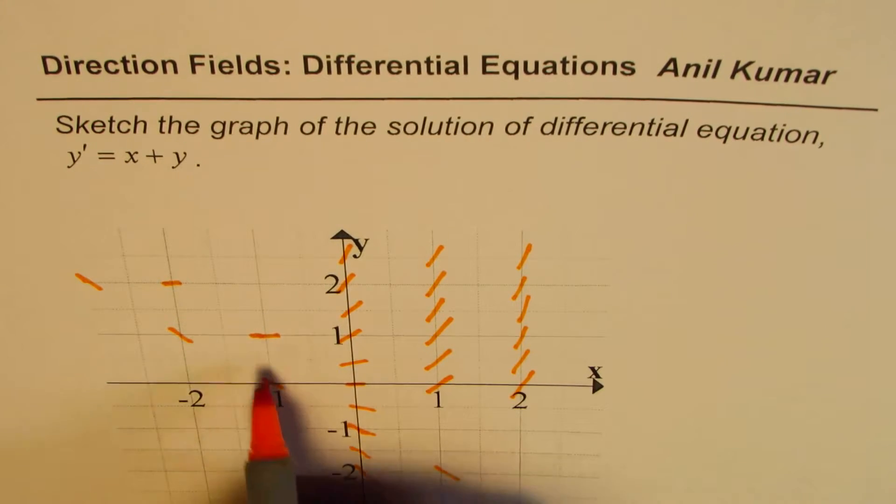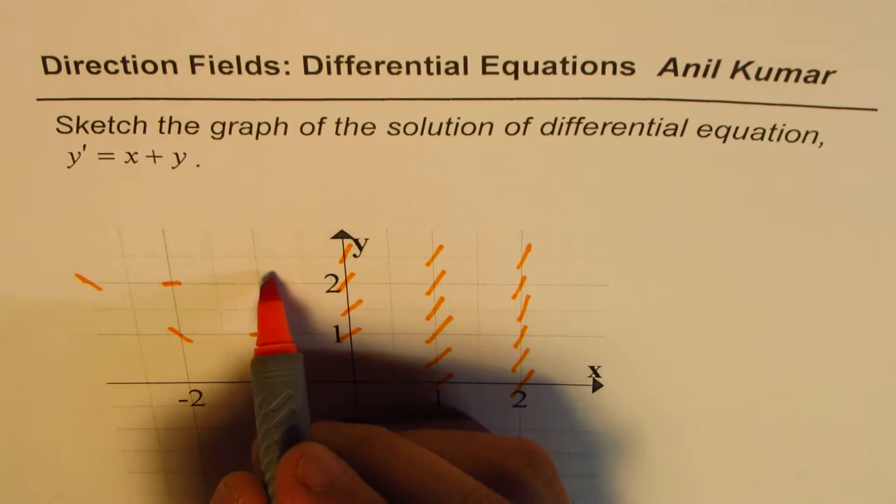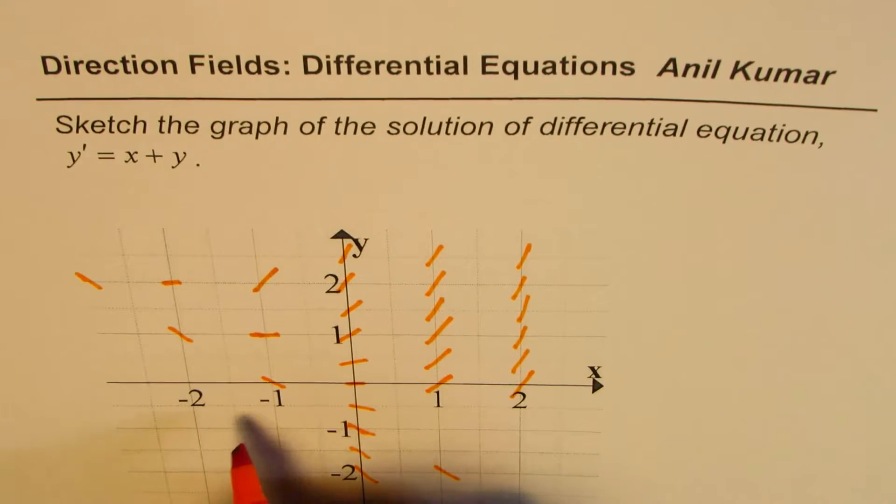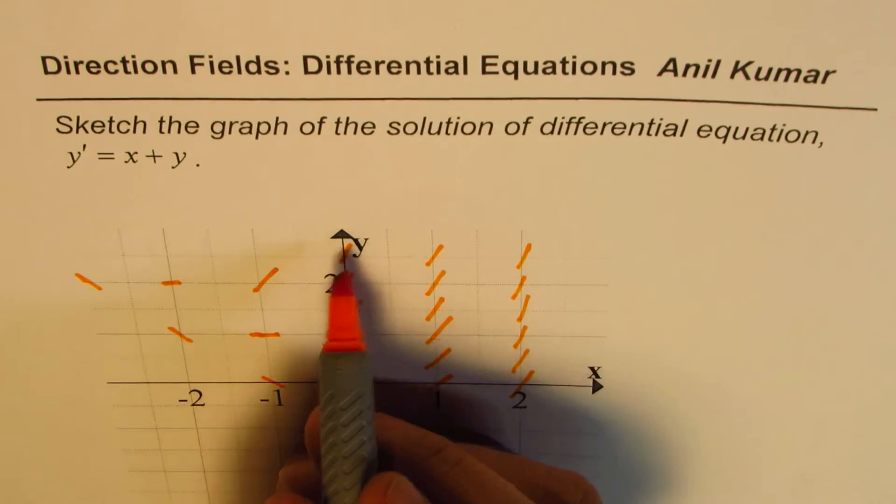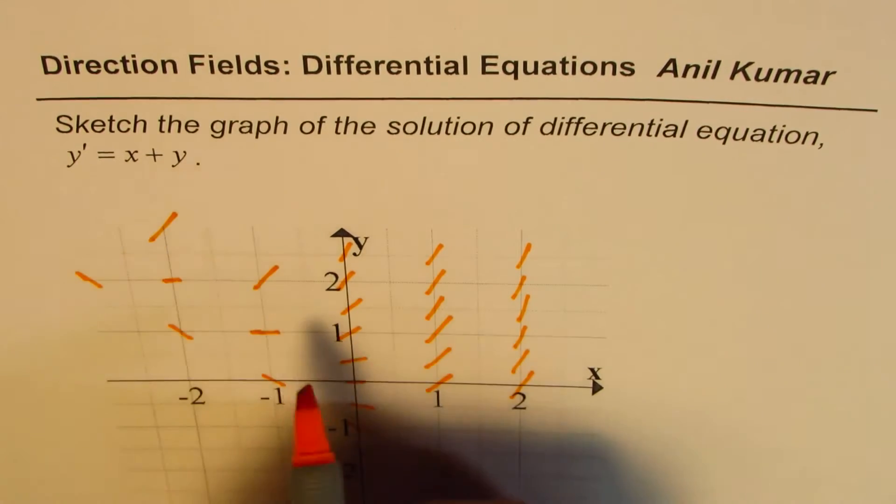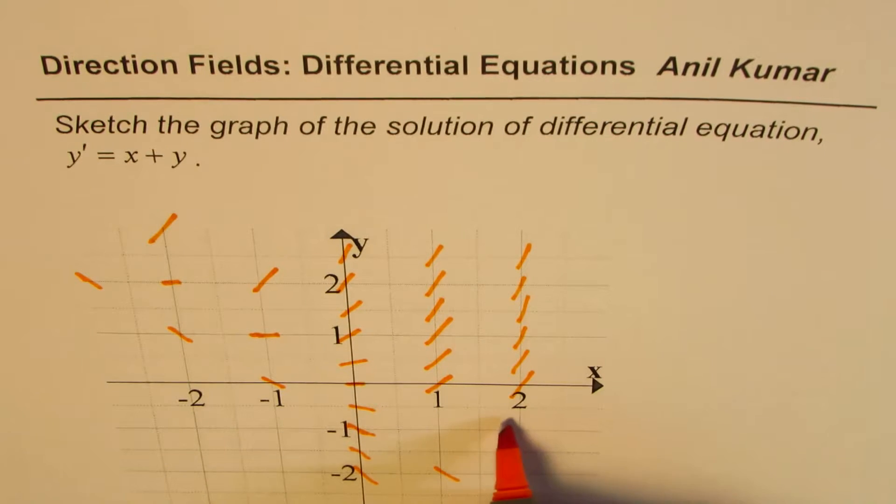So let me just make a few more of these. So at minus 1, if I take y as 2, 2 minus 1 is 1. So this slope will be 1. Likewise, at minus 2, if I take y as 3, it will be plus 1. So these are my plus 1 slopes. Do you see that? Plus 1 slopes.